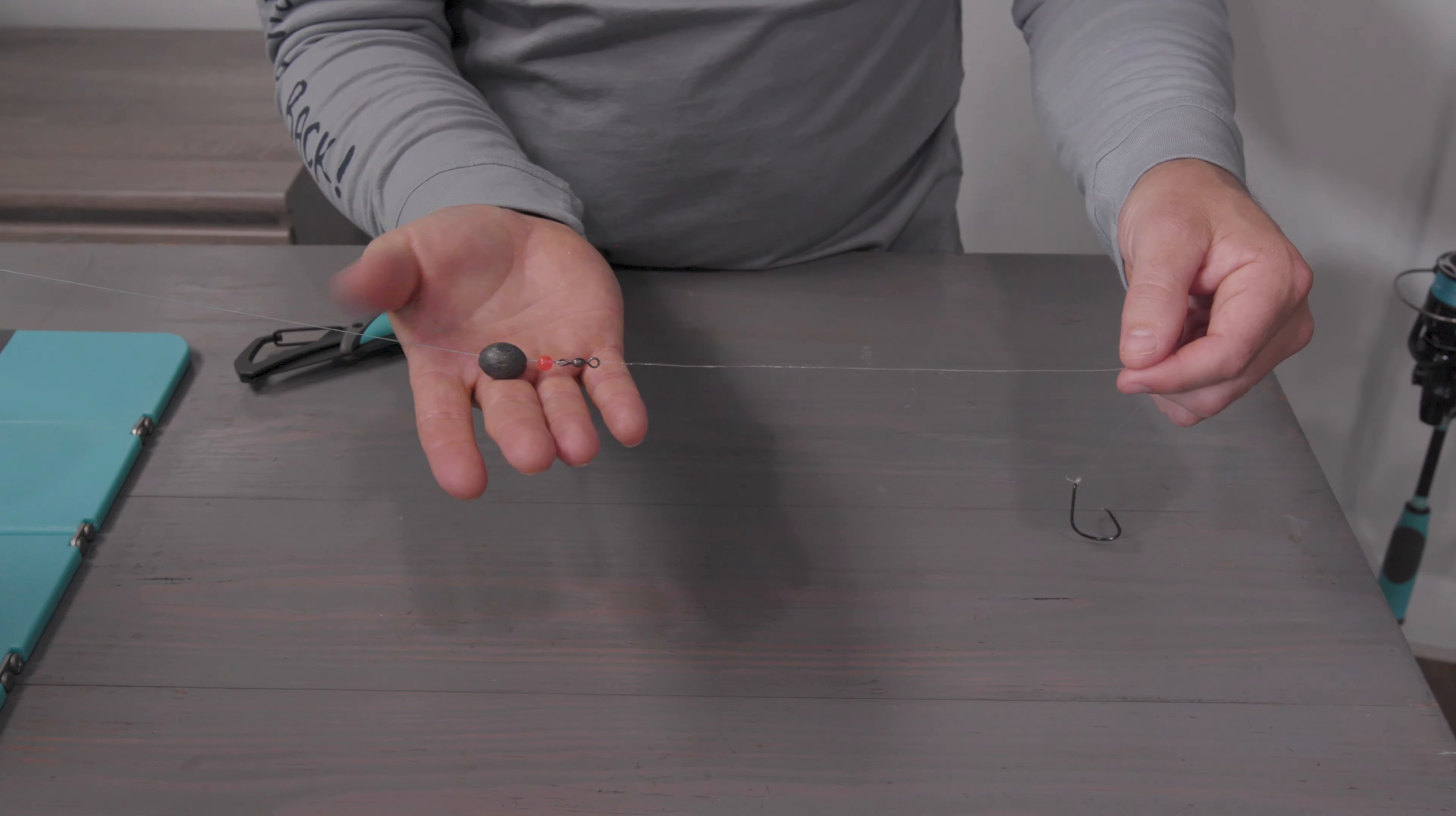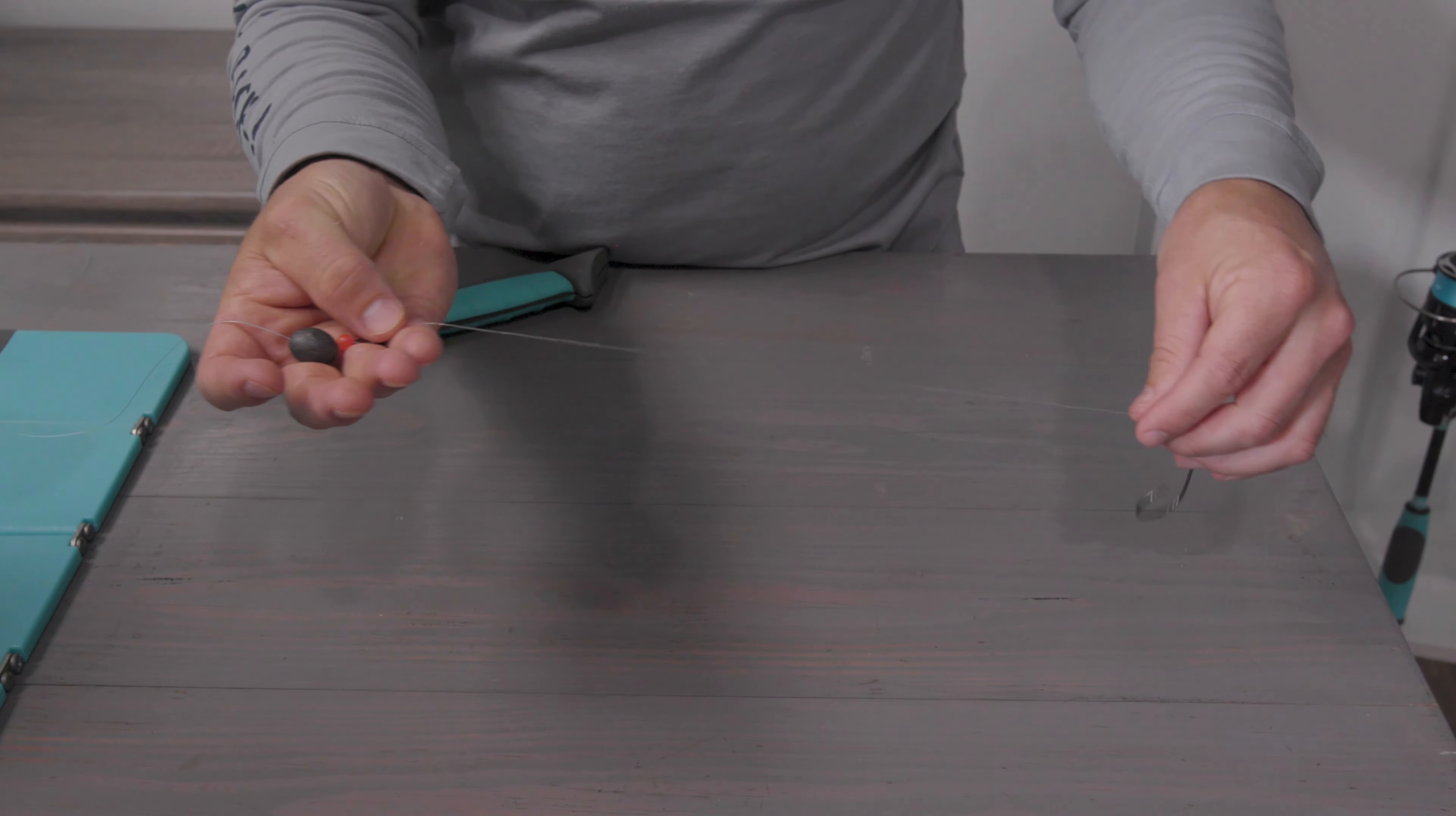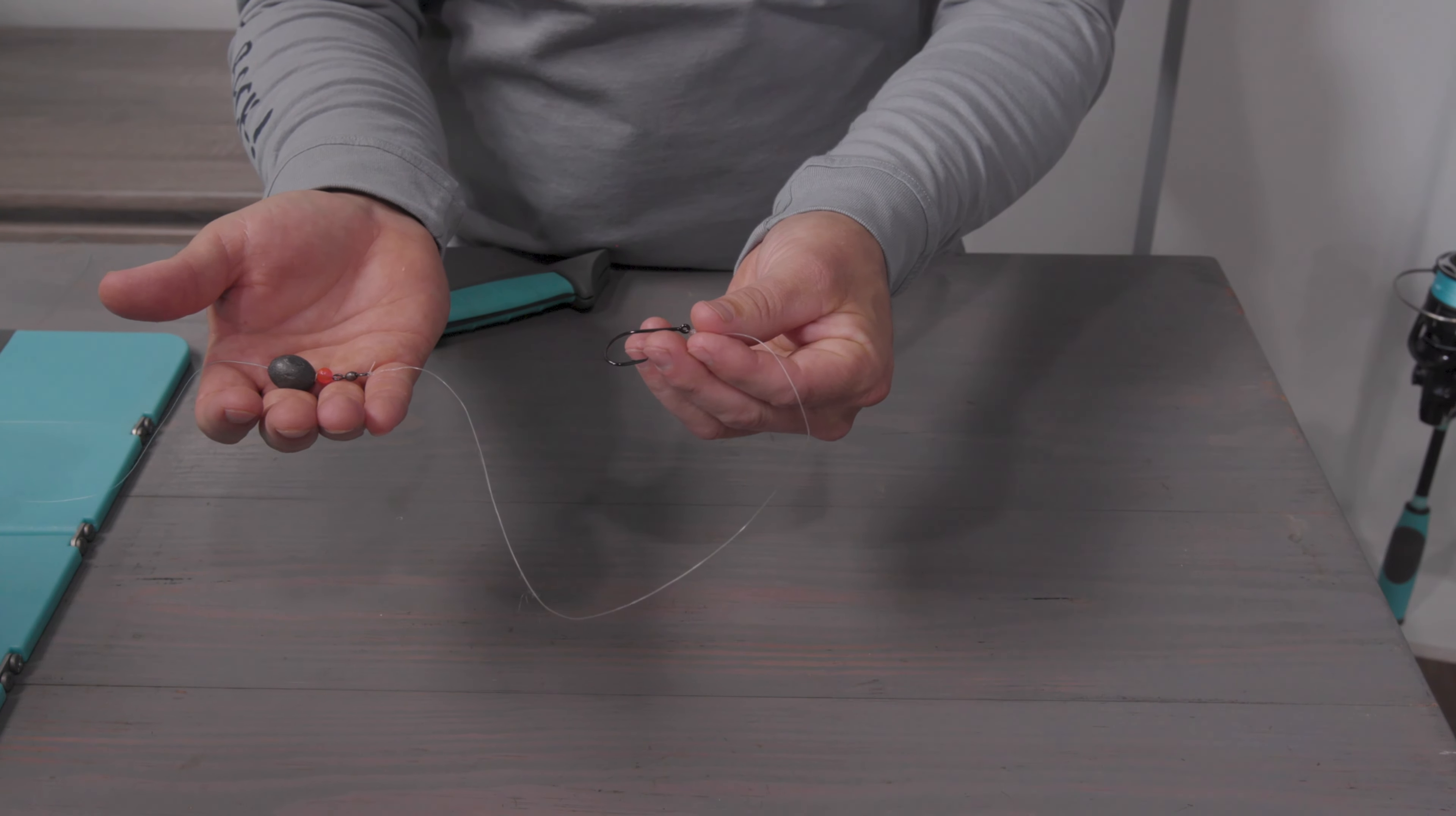As you can see, you have an eighth ounce egg sinker, you have a red bead, a barrel swivel, you have 10 inches of a 25 pound fluorocarbon leader, and a two-aught circle hook.